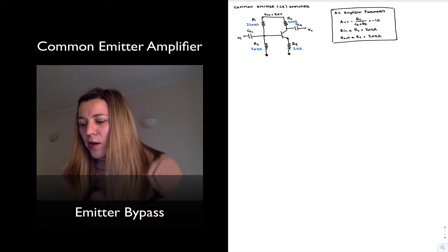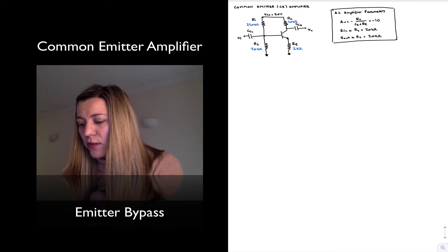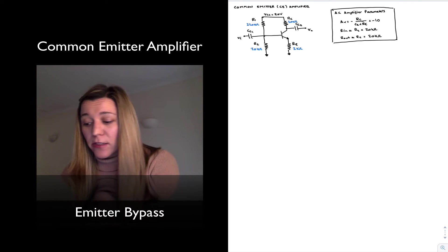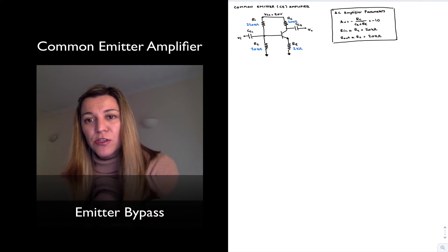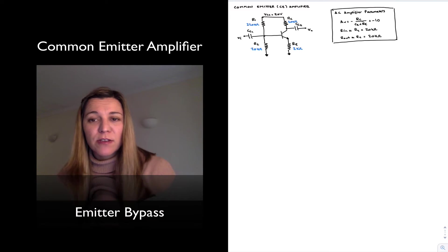Hi again. Let's revisit the common emitter amplifier and see how we can modify the AC gain. Looking at the amplifier as we just designed it with our four resistor biasing network, what we did before was calculate the gain, the input resistance, and the output resistance. We didn't really have much of a say or design component into the gain of the circuit. We basically set up the DC biasing network and the gain came out to be equal to negative 10, and so that's the gain.